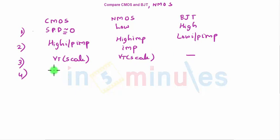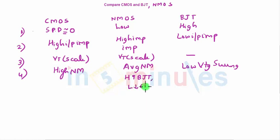We saw that when we studied static CMOS circuits, it has very high noise margin. This has very low voltage swings. NMOS has higher noise margin than BJT, but lower compared to CMOS. So overall, it has average noise margin. So we can say that higher compared to BJT, but lower compared to CMOS.